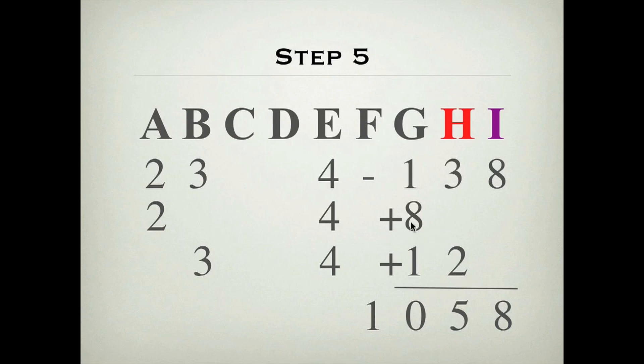So, getting these subproducts on the right rod is the key to success in multiplication on the Soroban. And, adding them up using beads, we have 8, 5, 0, and 1, or the product, now, 1058.